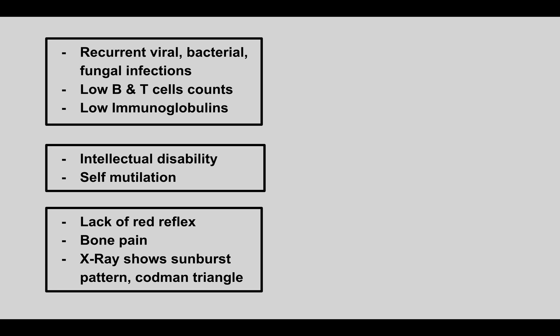The first condition: a patient comes in with recurrent viral, bacterial, and fungal infections, low B and T cell counts, and low immunoglobulins. This is SCID — severe combined immunodeficiency syndrome — which is a deficiency of adenosine deaminase.